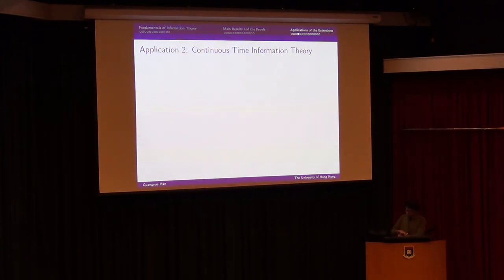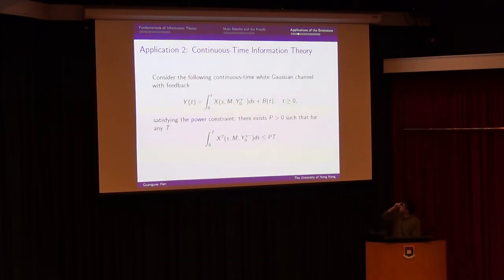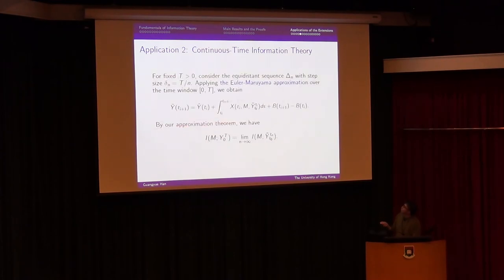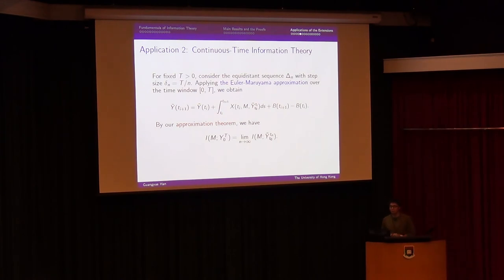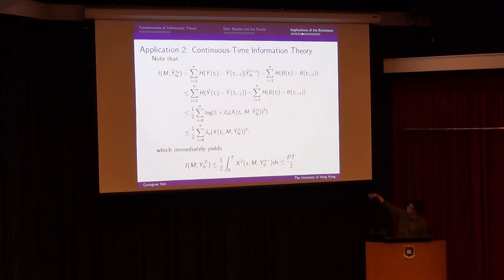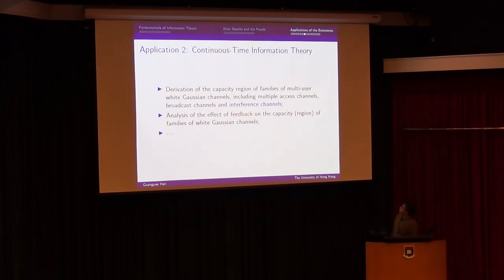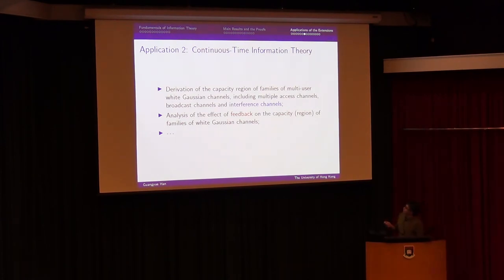Our approximation theorem can also be used to analyze capacity in continuous-time information theory more broadly. The general strategy is: take a continuous-time channel, apply our theorem to get a discrete-time channel, analyze it using the many available discrete-time tools, then take the limit to recover continuous-time results. This technique applies to many families of multi-user white Gaussian channels, including multiple-access, broadcast, and interference channels, and it accommodates continuous-time feedback.